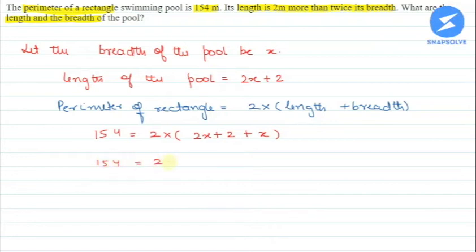So now 154 is equal to 2 into 2x plus 2 plus x. So now 154 is equal to 2 into 3x plus 2.